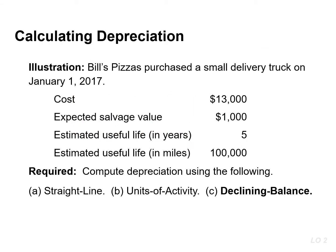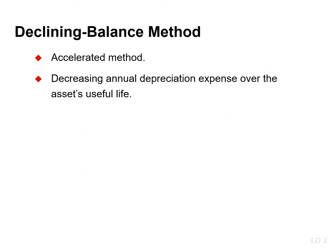Now, let's use this information to illustrate the declining balance method. This method is called an accelerated depreciation method because it results in more depreciation in the earlier years of an asset's life and less depreciation in the later years.